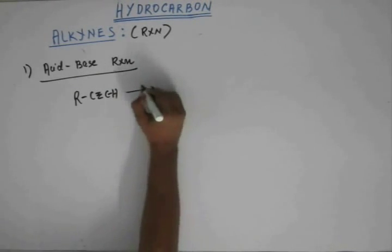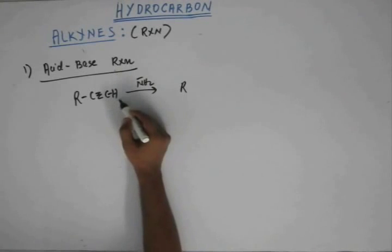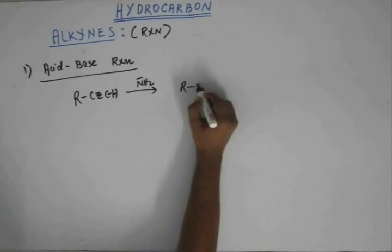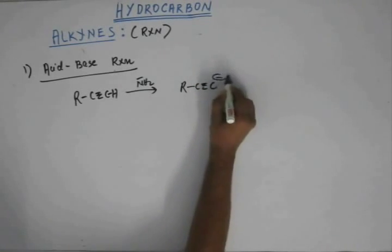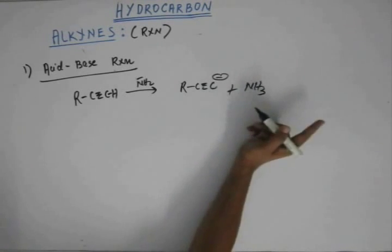So when you act as a base, like when you add amide ion, it is going to act as an acid-base. This is going to act as an acid giving hydrogen; this is going to act as a base taking hydrogen. So this is a simple acid-base reaction.